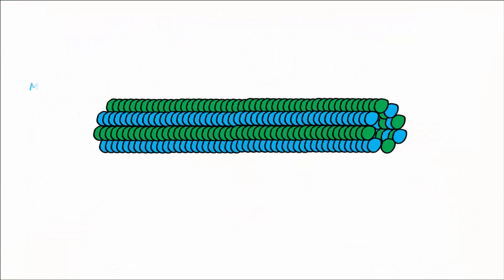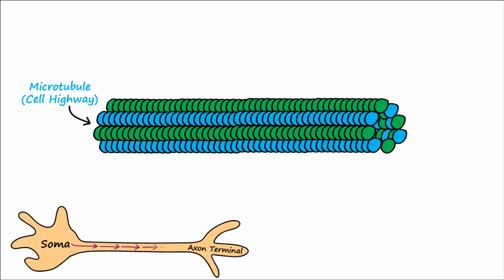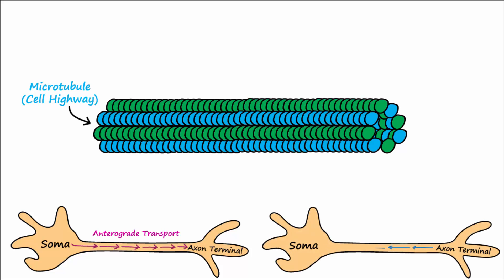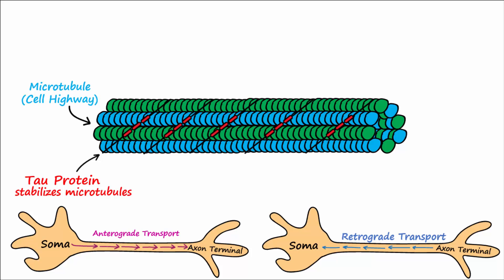Meanwhile, inside the neuron, microtubules come together to form a cellular highway to transport cellular products from the soma to the axon terminal and vice versa. Transport from the soma to the axon terminal is known as anterograde transport, and transport from the axon terminal to the soma is known as retrograde transport. A protein known as tau is very important in stabilizing the microtubule tracts that make up this cellular highway.